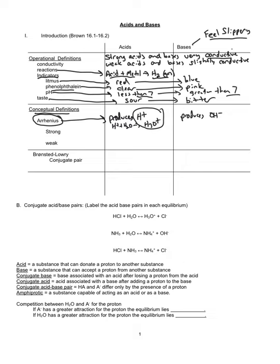Bases, based on the Arrhenius definition, produce hydroxide ions in water. The problem with this definition is not all acids and bases produce these in some reactions, and therefore this definition is a little bit too narrow. We need to make it more generalized, and that's where the Bronsted-Lowry definition comes into place.